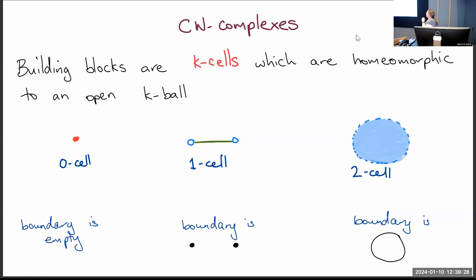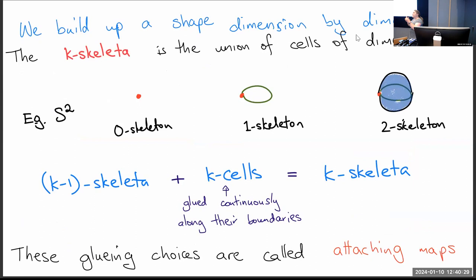A zero-cell is just a point. A one-cell is like an open interval — a curvy line without endpoints. A two-cell is like an open disk without its boundary. More generally, a k-cell is homeomorphic to an open ball. Cells also have boundaries: the boundary of a line is its two endpoints, and the boundary of an open disk is the circle on its edge.